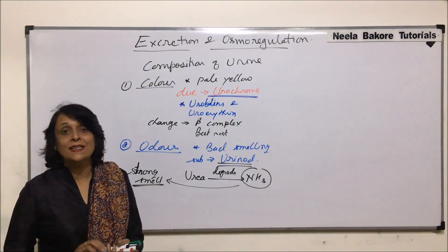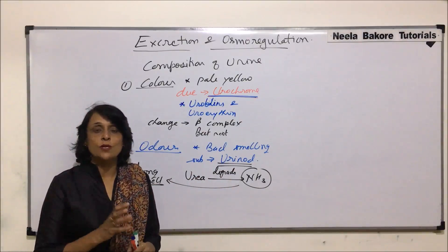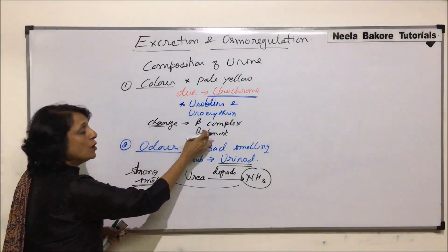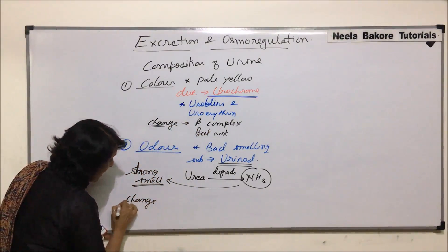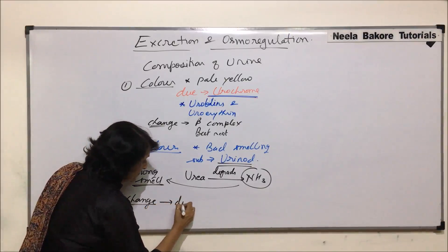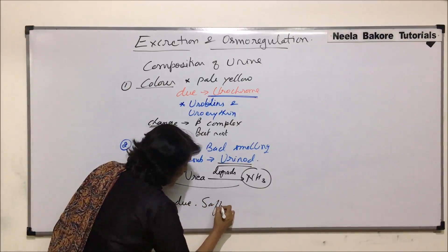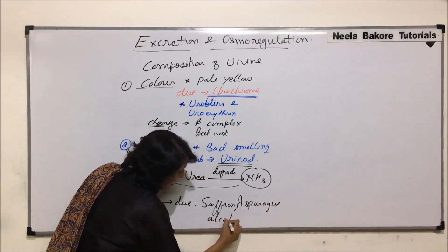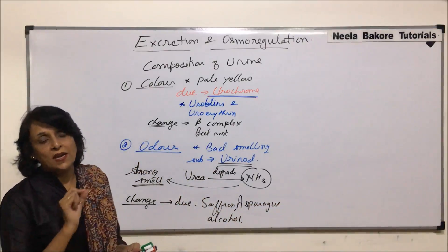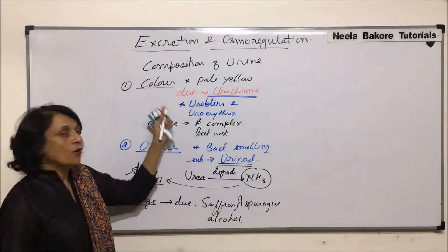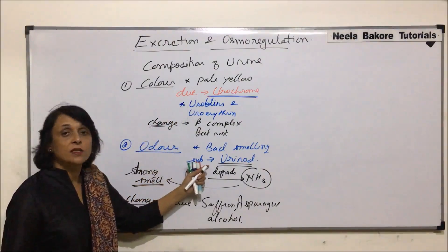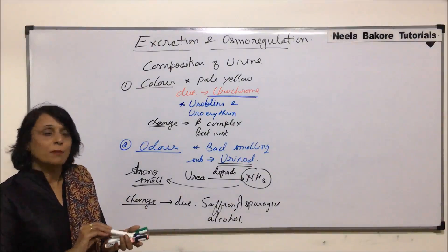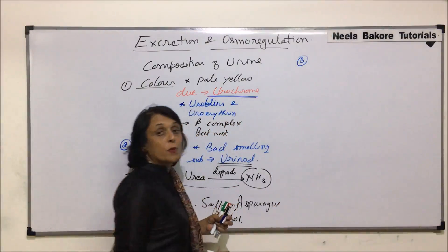It has been detected that when people consume certain kinds of substances, the smell of urine changes. Just as we saw a change in color due to certain substances, here the change in smell could be due to substances like saffron and even alcohol. So there is a change detected other than the normal smell.